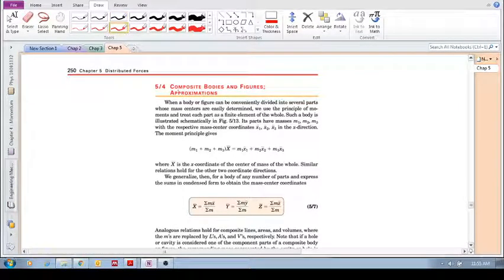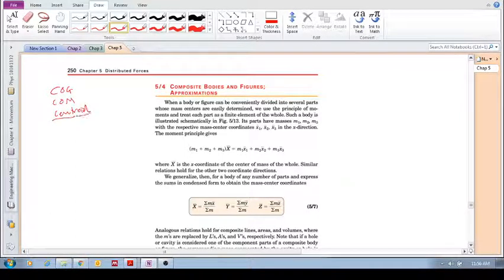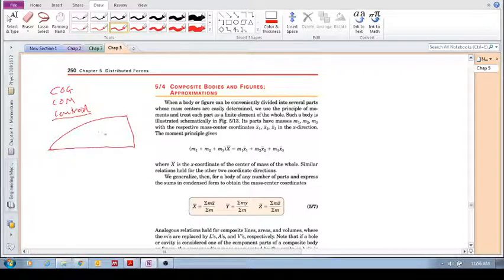In the previous sections, we looked at center of gravity, center of mass, and centroid - we focused a lot on the centroid. Essentially what we were doing was looking at these kinds of irregular shapes, and then we tried to find the centroid.